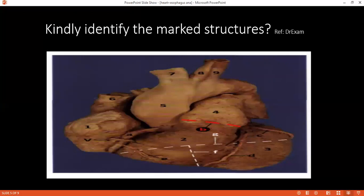In fetal life, the ductus arteriosus connects the left branch of the pulmonary trunk to the arch of the aorta. The foramen ovale serves as a communication between the two atria. What is the commonest site for coarctation of the aorta? It is usually distal to the origin of the left subclavian artery.